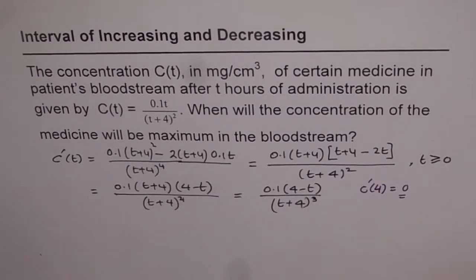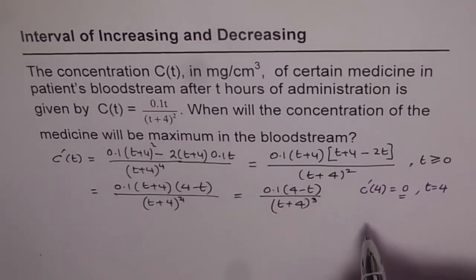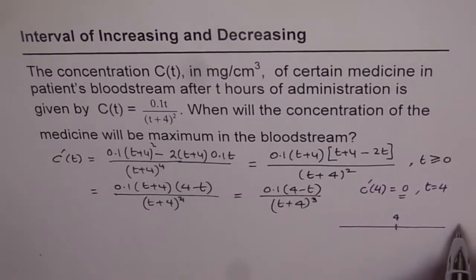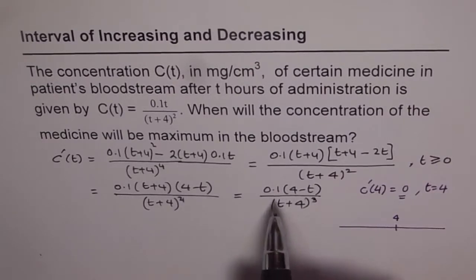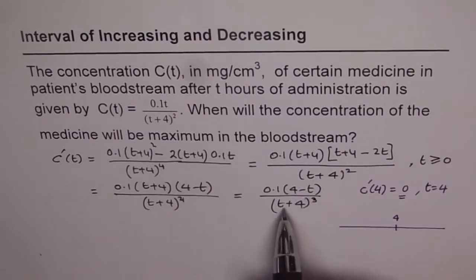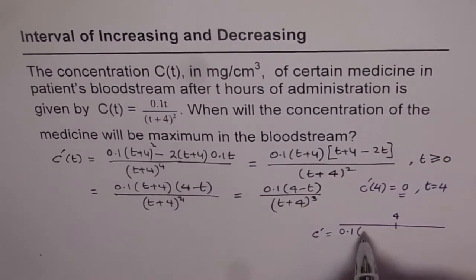If we put T = 4, we get C'(4) = 0, confirming it is a critical point. We will now check whether the concentration is increasing or decreasing before and after this point using a number line. T = 4 divides the domain into the intervals (0, 4) and (4, infinity). Our derivative is C'(T) = 0.1(4 - T) / (T + 4) cubed.